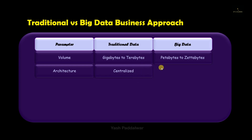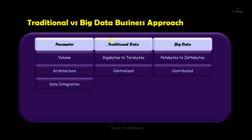In the big data approach, data is generating from petabytes to zettabytes and even more than that. The second parameter is architecture. In the traditional approach, the architecture is centralized — the entire storage and processing is done at a single place. In the big data approach, the architecture is distributed, and data is separately processed at distributed local machines.